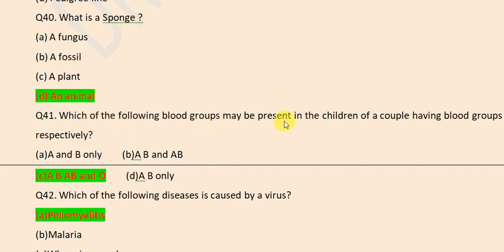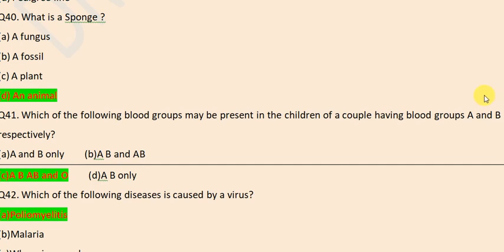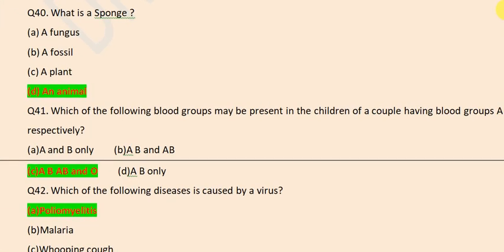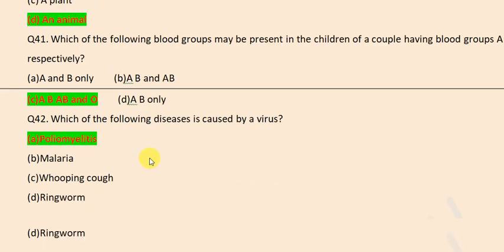Which of the following blood groups may be present in the children of a couple having A and B respectively? Answer is A, B, AB, and O.